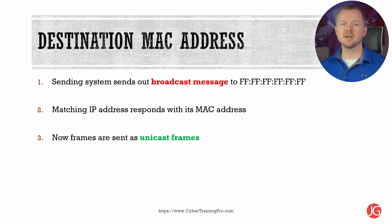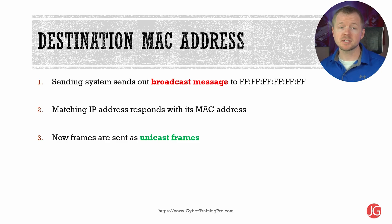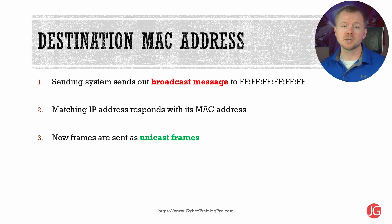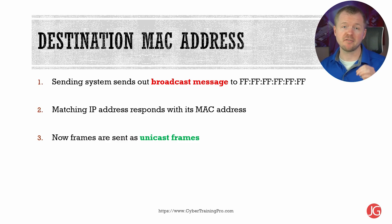You might be thinking, how do we know the destination MAC address? A lot of times our systems have already communicated with each other, but if they haven't, your system can send out a broadcast message to the broadcast address asking for the MAC address of a specific IP address. That F-F-F-F-F-F on the screen here is the broadcast address. All systems on the network will see that broadcast message, process it, and then the system with the correct IP address will respond with its MAC address.